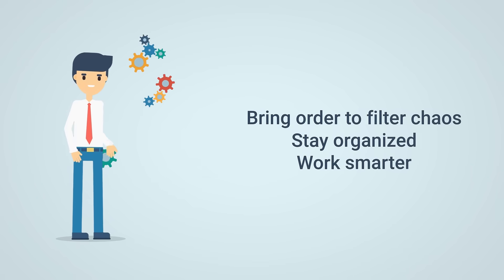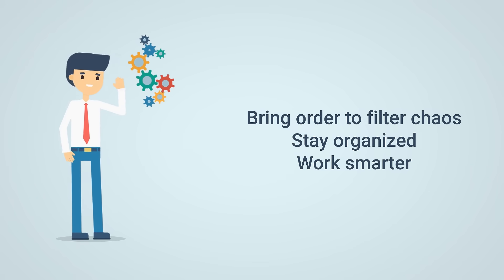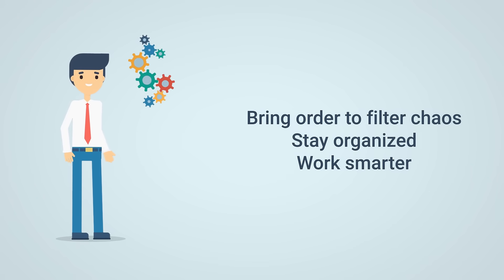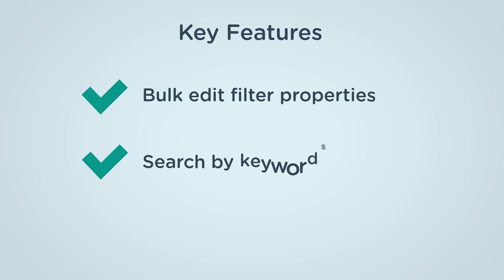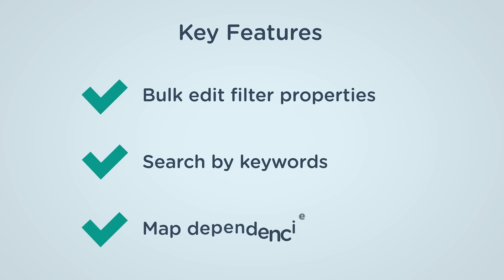Filter Catalog brings order to your Jira filters, helping teams stay organized, compliant, and efficient. Bulk-edit filter properties, search by keywords or user IDs, map dependencies to reduce risks.